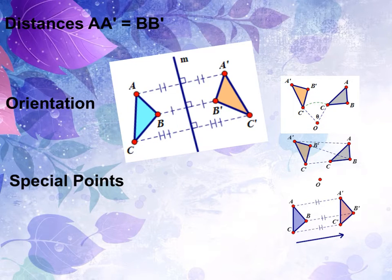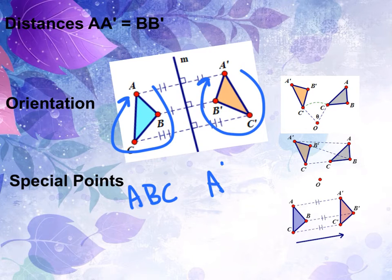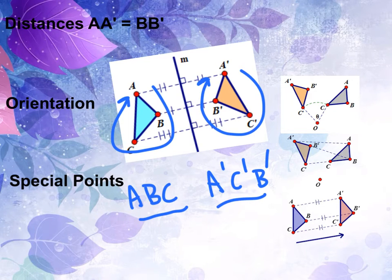Let's take a look at what we mean by orientation then. If we take the ordering of the points here, A, B, C, going clockwise, if we go clockwise again, we get A prime, C prime, B prime, which tells us that the orientations are reversed of each other.